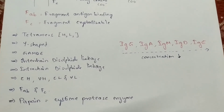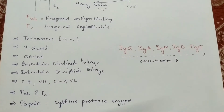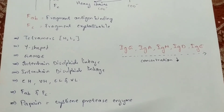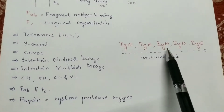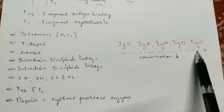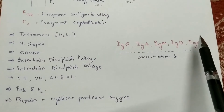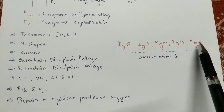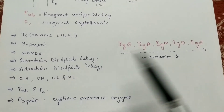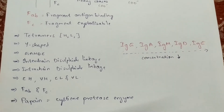IgD is present on the surface of B cells. B cells are derived from the spleen, and when chemical signals are received from T helper cells, the B cell gets converted to a plasma cell. IgE is associated with allergic conditions and can be studied further in the context of type 1 hypersensitivity. Each immunoglobulin type is differentiated by its specific properties.